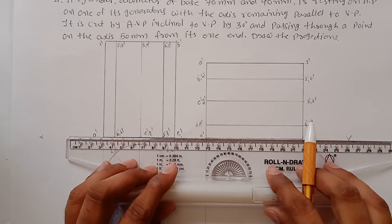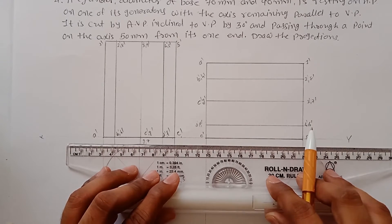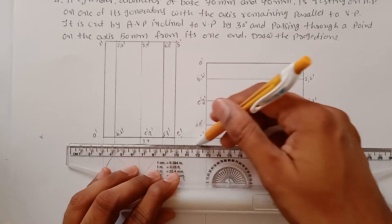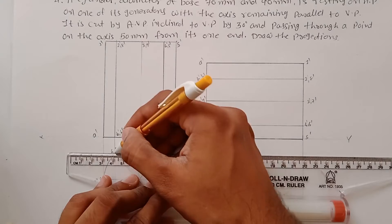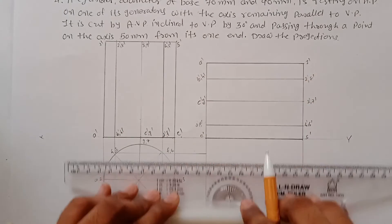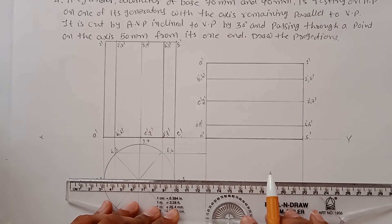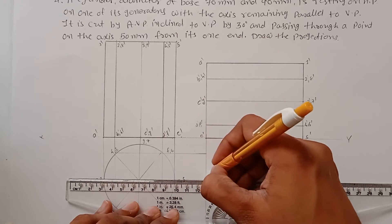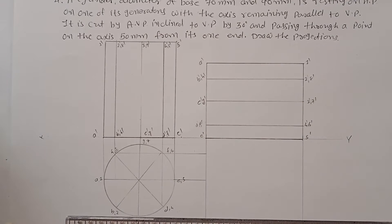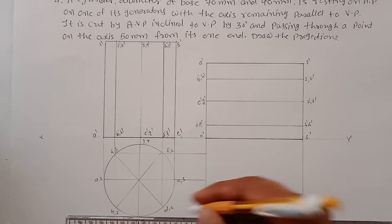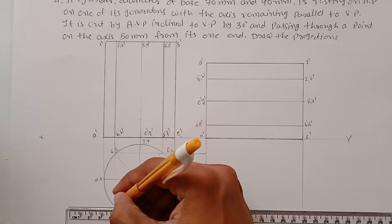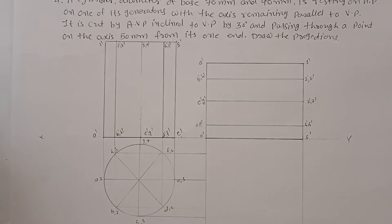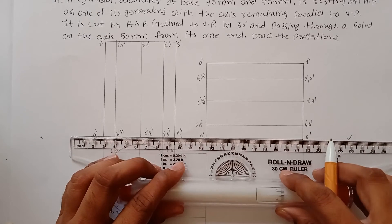Draw the projections from the front view to find the points of intersecting lines, and complete the top view with a thick line.